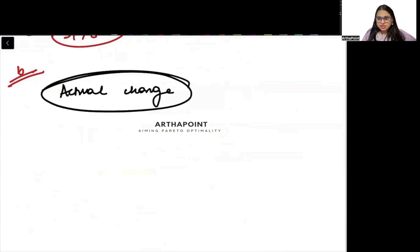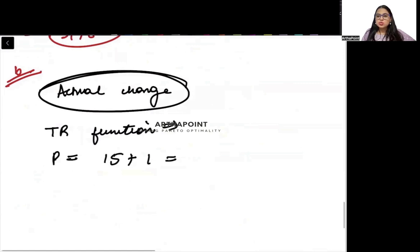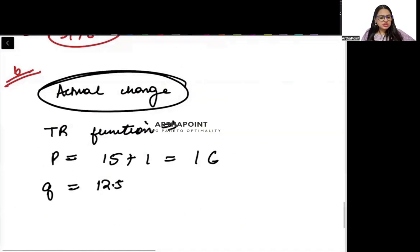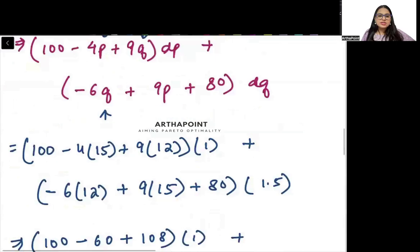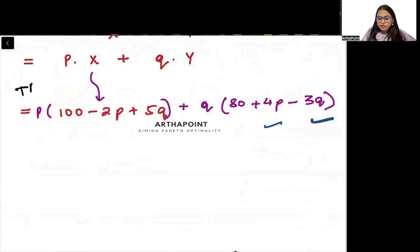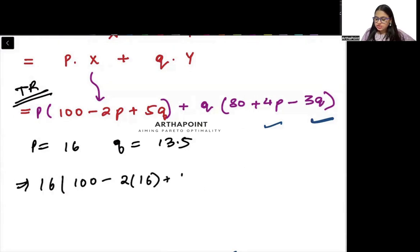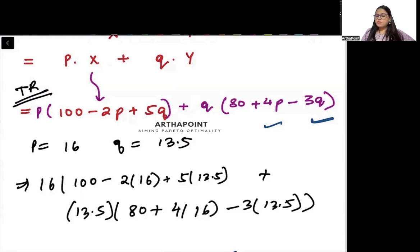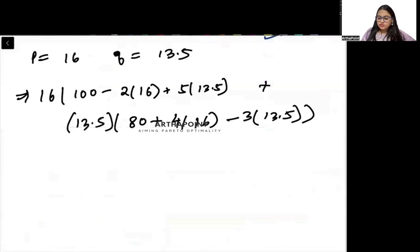Now suppose we compare with the actual change - how much change in the actual revenue? In your total revenue function, if we put new prices, what is your new price? First price was 15, price increased by 1.5, so your new price of good X is 16.5. It was 12, then increased by 1.5, so it becomes 13.5. If I go back to my original total revenue function and put price 16.5 and the other price 13.5, I will get 16.5 times (100 minus 2 into 16.5 plus 5 into 13.5) plus 13.5 times (80 plus 4 into 16.5 minus 3 into 13.5).